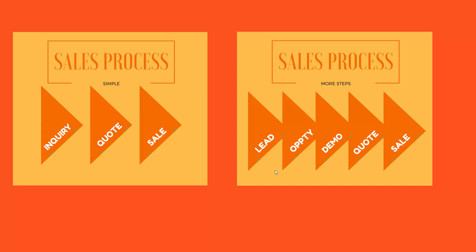The more complex process starts with a prospect being just a lead. Once you know there is a match between their need and your product or service, it becomes an opportunity. Then it may lead to a demo stage where you show how it meets the prospect's needs. After the demo the prospect may request a quote, and finally they may choose to buy, becoming a sale and then a customer.